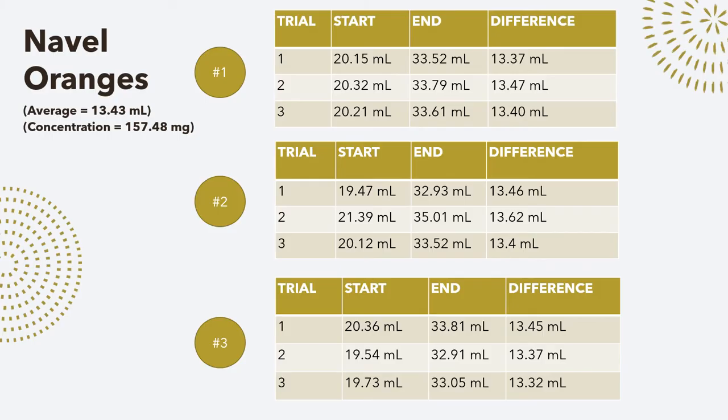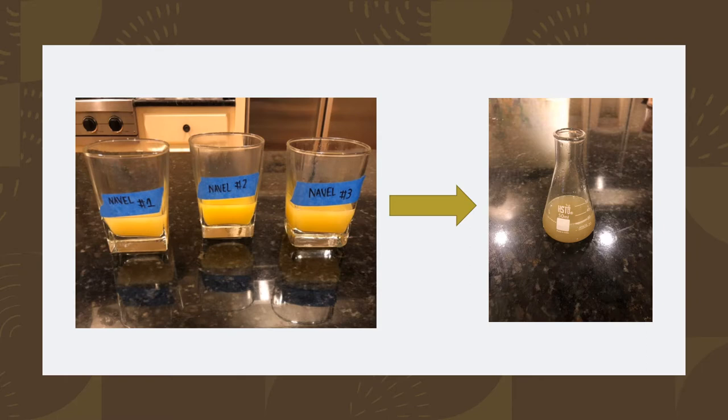Next are the navel oranges. I did three different oranges, all about the same size and weight for consistency, and I did three trials for each. On average, it took about 13.43 milliliters of iodine to titrate it and it contained 157.48 milligrams of vitamin C. As you can see, it was a pretty orange color and then it turned a more grayish orange color — the color doesn't show up as prominently as in person.